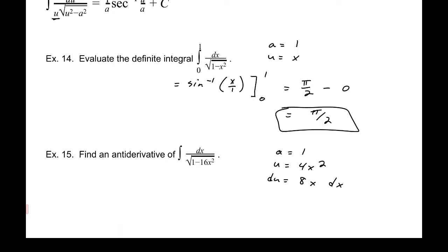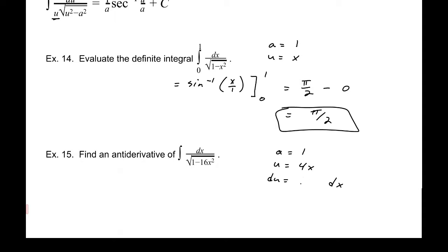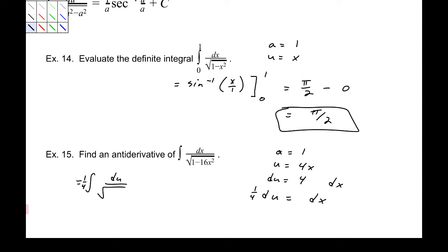I made a mistake there — go back. This is actually u equals 4x, which makes du equal to 4 dx, or dx equals 1/4 du. So we are going to replace this and rewrite the integral. It's going to be 1/4 du over the square root of — remember, a is just 1 — so it is 1 squared minus 4x squared. The integral of this is 1/4 sine inverse of u over a, which is 4x over 1, plus c.